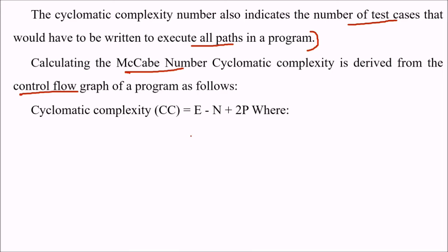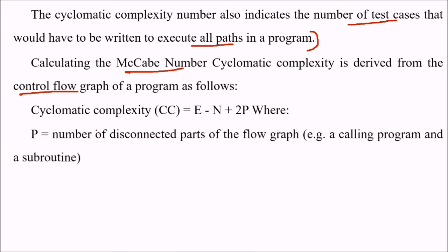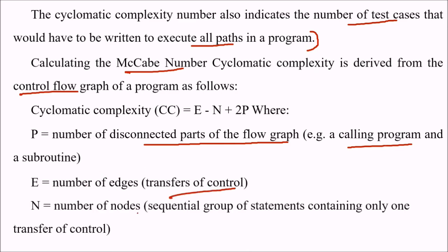I am just reiterating to make you understand a little bit more. P is the number of disconnected part of the flow graph, as we have just seen, predicate, that is a quality program or a subroutine. E is the number of edges, transfers of control. N is the number of nodes, that is the sequential group of statements containing only one transfer of control.